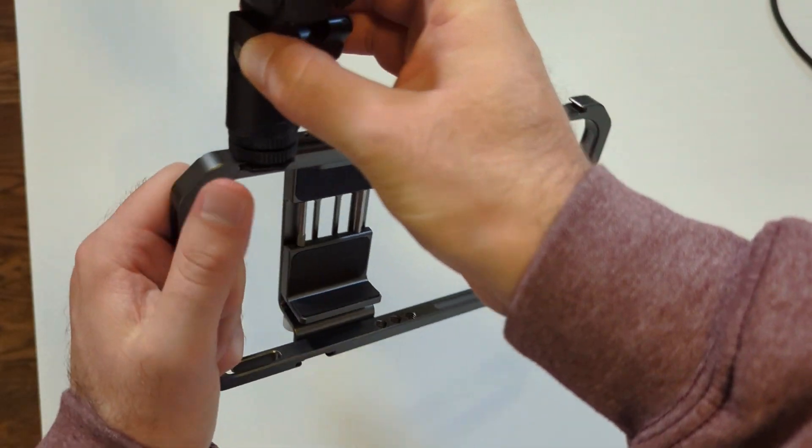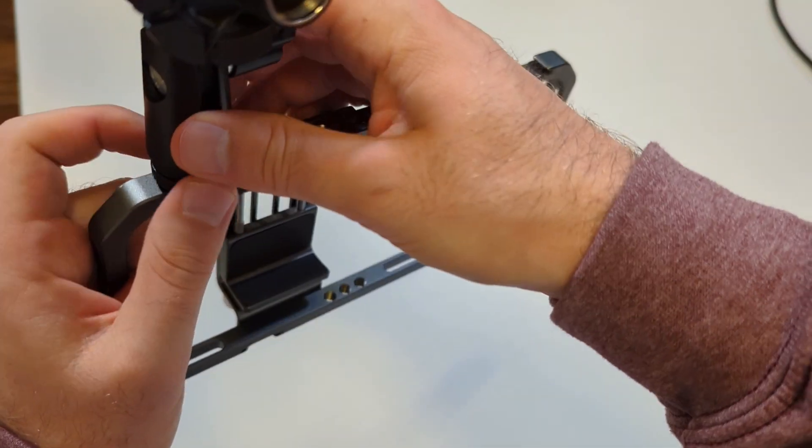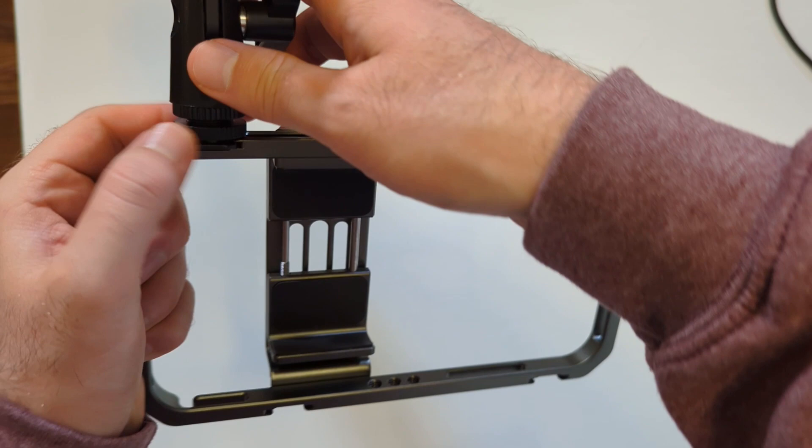On the long side of the SmallRig you have two cold shoe mounts at the top and the bottom if you're shooting horizontally. In particular I use this to add my audio devices. Here I have my stand for my mic which I can use to attach my microphone.